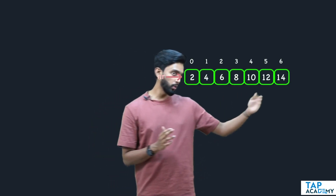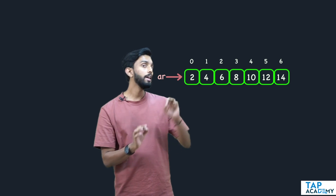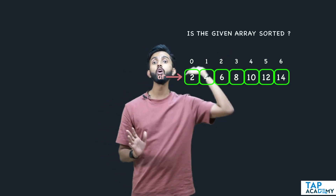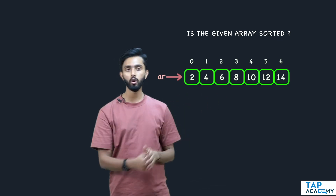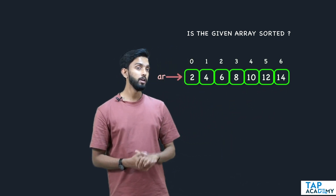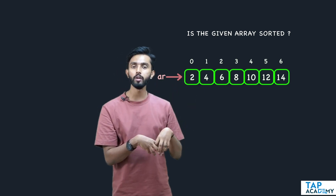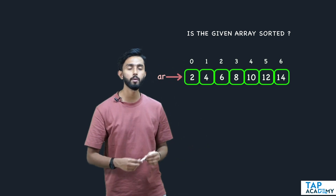We are going to be learning some basic operations on arrays which you must and should know. For example, assume I've given you an array — I'll ask you to check and tell me if the given array is sorted or not. The question is for you to return true or false: sorted or not. You can look at it and tell me yes it is sorted, but the computer has to tell you. So how would you do it?